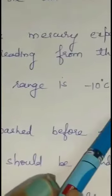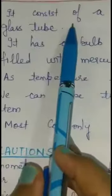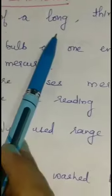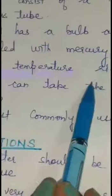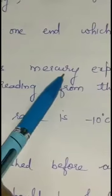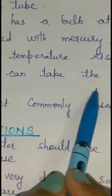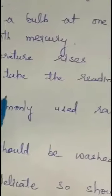The most commonly used range is minus 10 degree Celsius to 110 degree Celsius. Like the laboratory thermometer, it consists of a long, thin, uniform tube, and the bulb is filled with mercury. As the temperature rises, mercury expands and goes into the stem. We can take the reading from the stem. This is all about laboratory thermometer working.